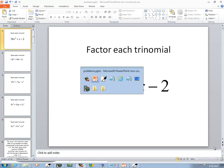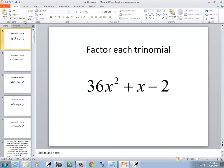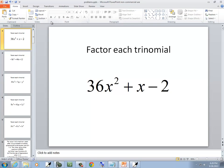In this problem, we want to factor the trinomial. So we've got 36x squared plus x minus 2.